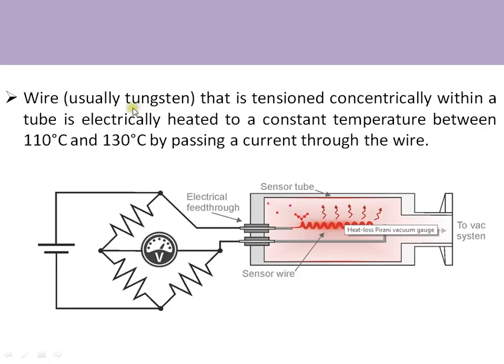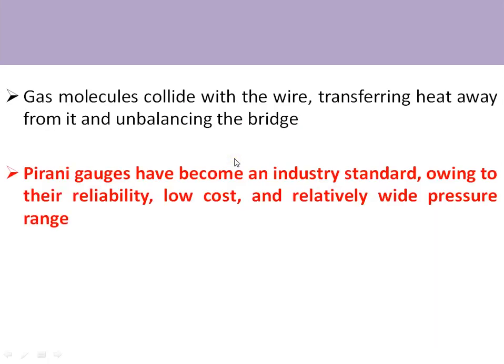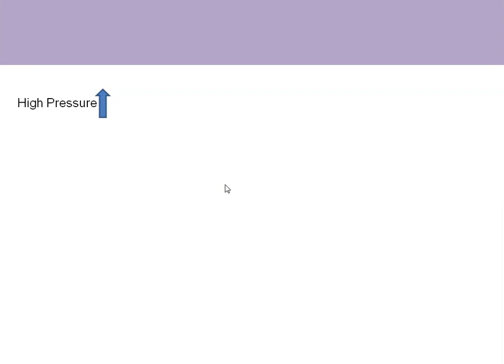The wire is tensioned within a tube and electrically heated to a constant temperature between 110 and 130 degrees Celsius by passing a current through it. Gas molecules collide with the wire, transferring heat from it and unbalancing the bridge. This unbalance produces an output voltage measured using the Wheatstone bridge. The Pirani gauge has become a wide industry standard because of its high reliability, low cost, and relatively wide pressure range — from atmospheric pressure down to 10⁻⁵ millibar.